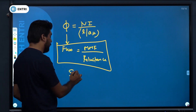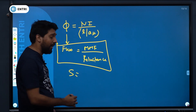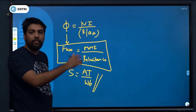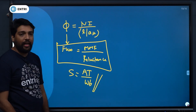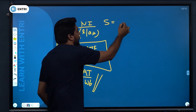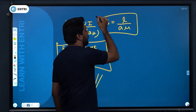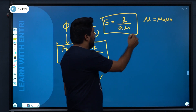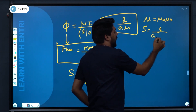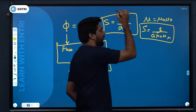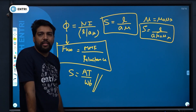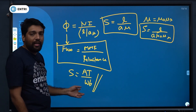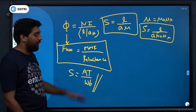What is reluctance? S = MMF/flux. Its unit is Ampere-turns per Weber (AT/Wb). The reluctance equation is S = L/(A×μ), where μ = μ₀×μᵣ. So S = L/(A×μ₀×μᵣ). The formula for flux equals MMF by reluctance is the key relationship.